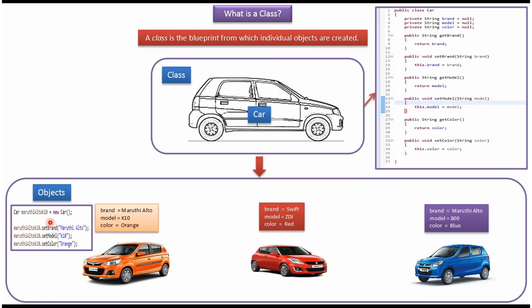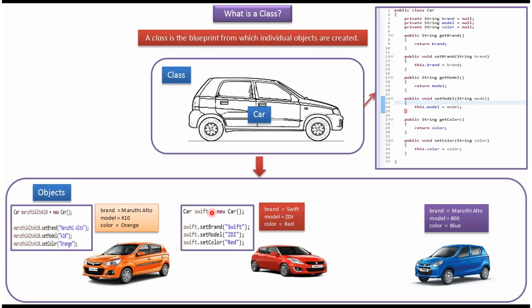This is how we create the Maruti K10 car object: Car maruti_k10 = new Car(). And I am setting the brand, model, and color. Like that I have created the Swift car object and set its brand, model, and color.